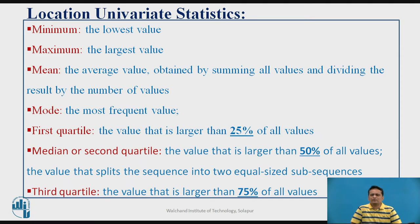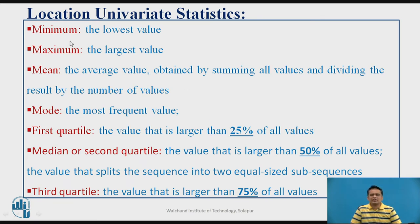For calculating all location univariate statistic values, you have to rearrange the attribute data — either in ascending or descending order. Usually we arrange in ascending order. Once arranged, the first value represents the minimum value of the attribute — the lowest value observed. For example, the minimum weight present in a dataset of weights. Similarly, the maximum is the largest value observed.